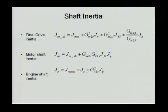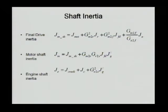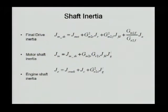The motor shaft itself also has to add the generator shaft. The generator shaft inertia is transferred by the planetary gear to the motor shaft. The union shaft includes the crankshaft itself, the carrier, and also the inertia transported from the generator side — the sun gear side.